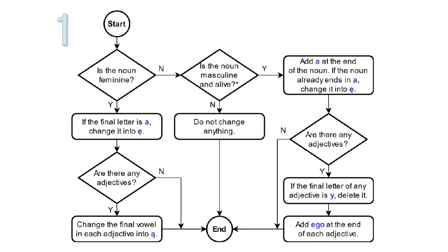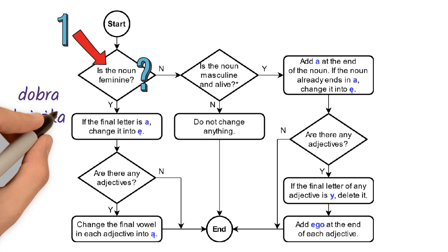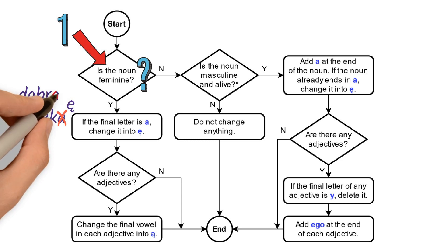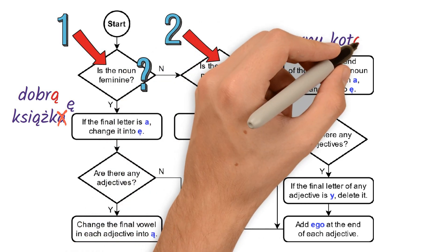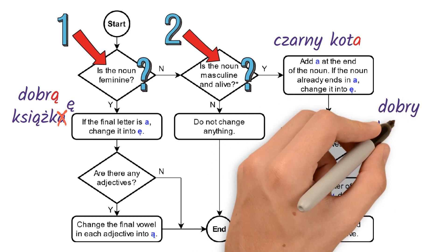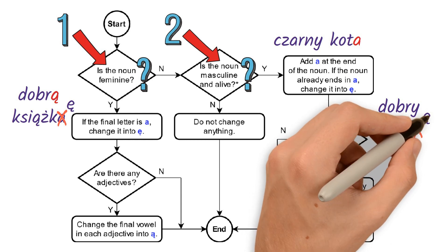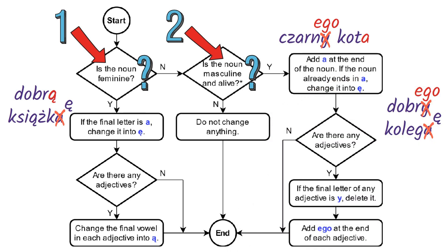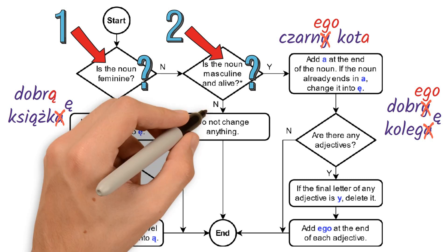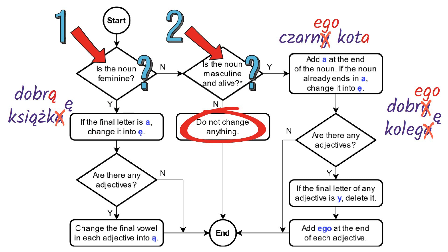Look at the following flowchart. Is the object noun feminine? If so, change the final -a into -ę, and add the same tail to the final -a in all adjectives describing the noun, effectively changing it into -ą. Is the noun masculine and animate — representing a living entity? If so, append it with -a. If the noun already ends in -a, change it into -ę. Then add the suffix -ego to any adjective describing the object. If your noun does not fit into either of these two categories, just leave it the way it is — leave it in the base nominative form.